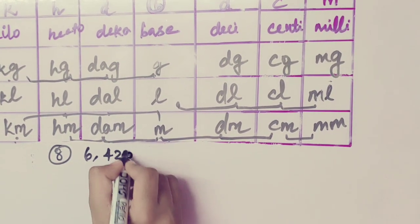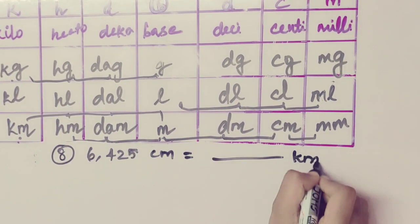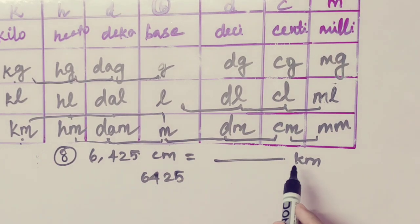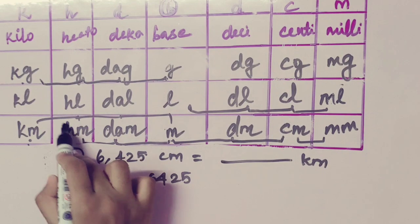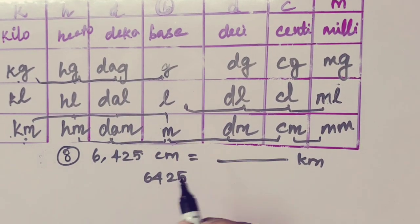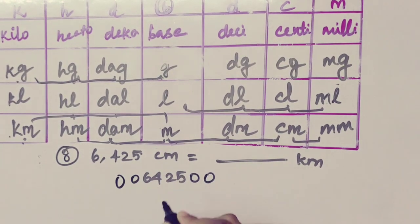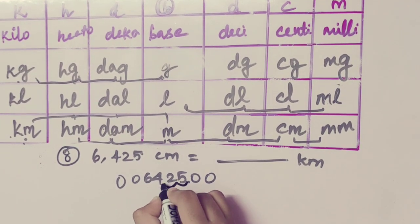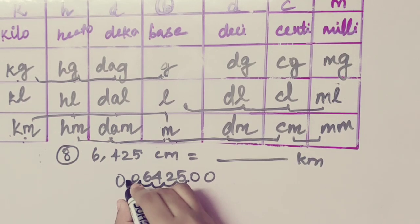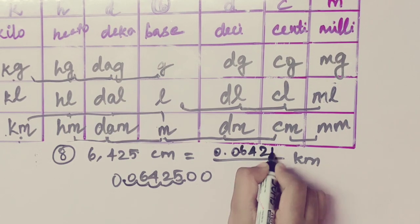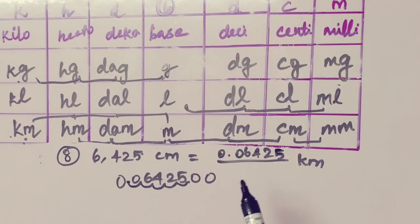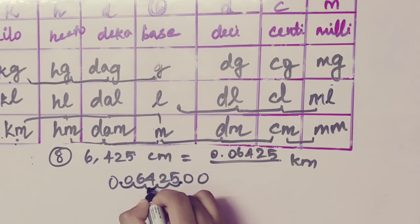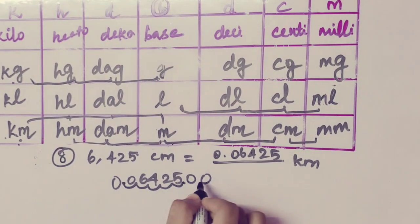6,425 centimeter equal to dash kilometer. Centimeter to kilometer — five times to the left side. We add zeroes as needed. Point moves left five times: one, two, three, four, five. The answer is 0.06425 kilometer.